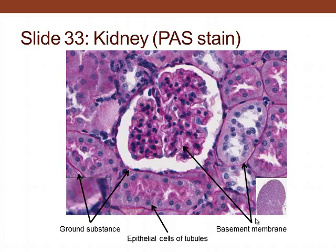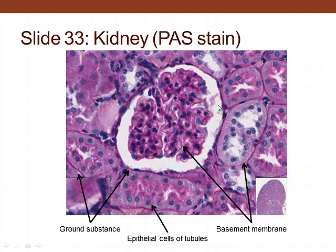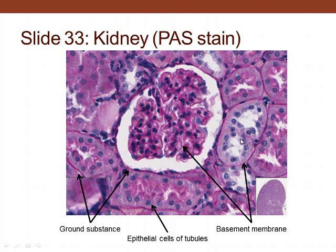Next we revisit the kidney. Previously we looked at the basement membrane and glycocalyx of the brush border of the proximal tubule. Today we focus on extracellular matrix: fibroblasts support the tissue between structures, and collagen bundles provide support throughout the interstitium.